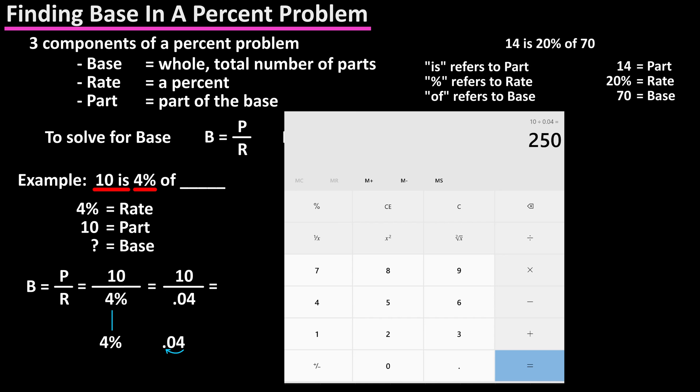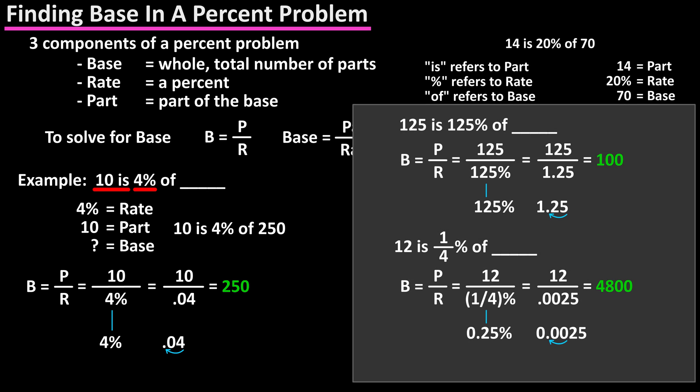Now using a calculator, we have 10 divided by 0.04, which gives us a final answer of 250. Here are a couple more examples of finding the part with the steps written out on the screen for you.